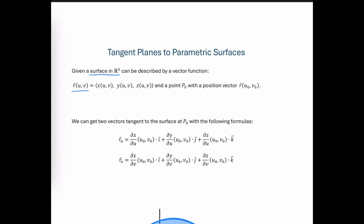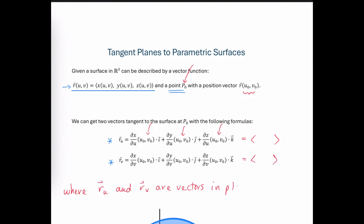Given a 3D surface expressed parametrically, in order to find the equation of a plane tangent to that surface at a point, we need to first find the partial derivative with respect to u of the parametric surface equation, then the partial derivative with respect to v. Once we find those two first partials, we plug in the values of u and v that get us to that point. When we plug in those uv values, we end up with two constant vectors that lie in the tangent plane, which can be used to find the vector perpendicular to the plane.